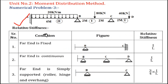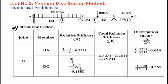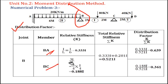Then we went through the relative stiffness. If the far end is fixed, you take I by L. If the far end is continuous, you also take I by L. If the far end is simply supported — roller, hinge, or hanging — you take 3/4 times I by L. Then we calculated the distribution factor for the intermediate joints and members connected to the intermediate joint, using relative stiffness divided by total relative stiffness. For BC it is 0.639 and for CB it is 0.361.